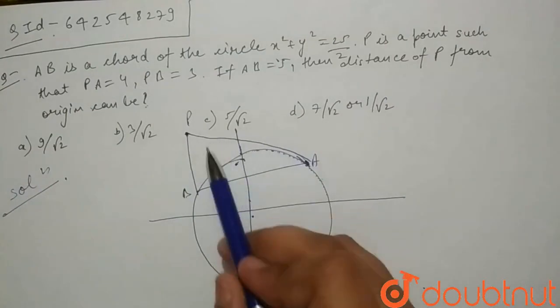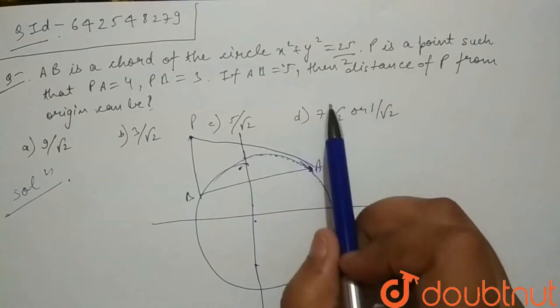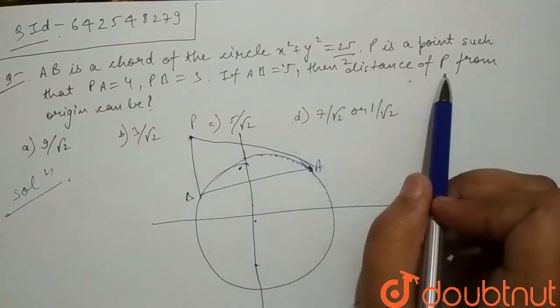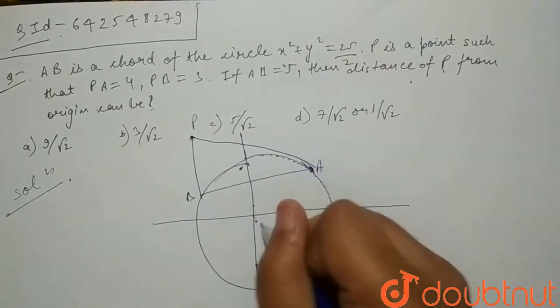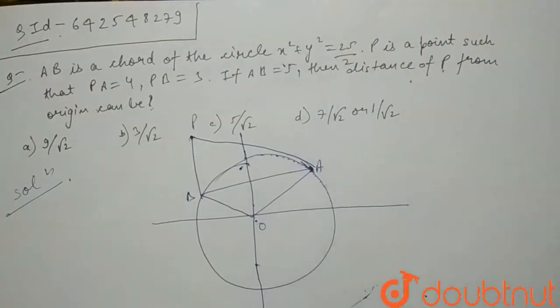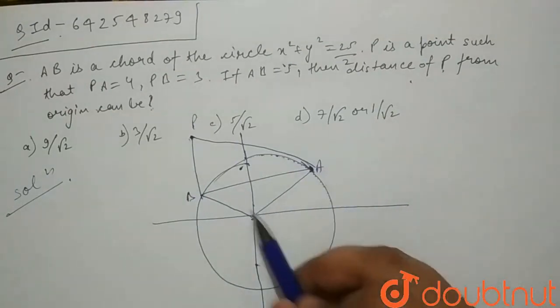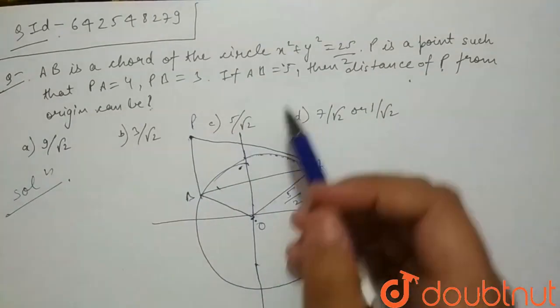So this is the triangle PAB, and in the question, the distance is asked of point P from the origin. As this is the origin, let's say this is the triangle OAB. As you can see, OA and OB are the radiuses which have the value 5 by 2.